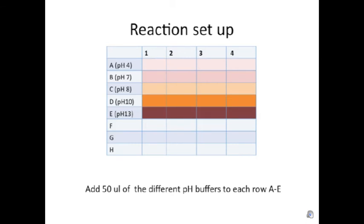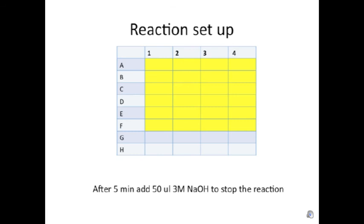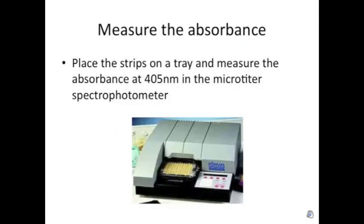You will then add different pH buffers to each of the rows A to E as indicated. Having done that, you will then add the substrate nitrophenyl phosphate to columns 1 and 2, where nitrophenyl phosphate is dissolved in water, and in columns 3 and 4, where PNPP is dissolved in a buffer at pH 8.5 at a higher concentration of 100 millimolar, while the other buffers were at 10 millimolar. Finally, after 5 minutes, you will stop the reaction by adding 3 molar sodium hydroxide to all the tubes.